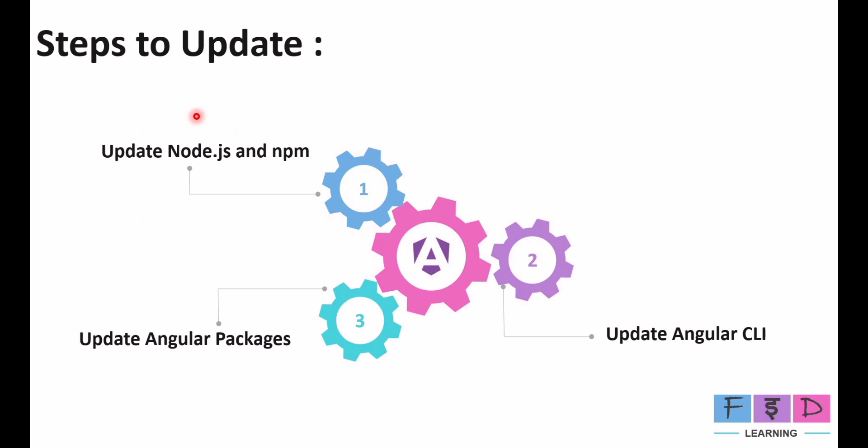The first step is to update Node.js and npm. Before migrating the Angular application, ensure that your Node.js and npm versions are compatible with Angular 17 or 18. You can update Node.js by downloading the latest version from the official Node.js website. npm is automatically included with the Node.js installation. You can check versions with `node -v` and `npm -v`. I'll skip this step since I already have the latest Node.js installed.